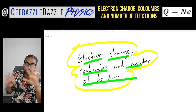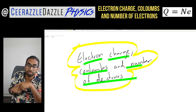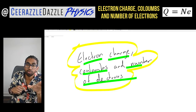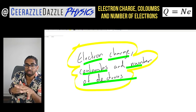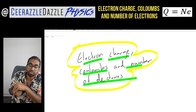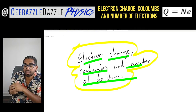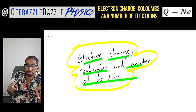Hey everyone, welcome to another session of Sir Razzle Dancehall Physics. In today's session we're going to be talking about the relationship between electron charge, coulombs and the number of electrons. So put down today's title: electron charge, coulombs and the number of electrons. Before we get going, make sure you hit the like and subscribe button to keep the channel going and keep the content and lessons as free as possible.